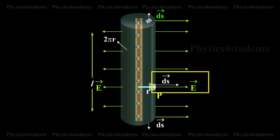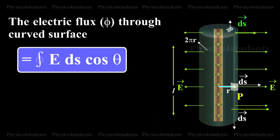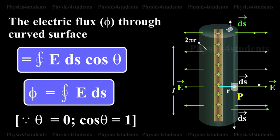Vector E and vector ds are along the same direction. The electric flux phi through curved surface equals integral E ds cos theta. Phi equals integral E into ds. Theta equals 0, cos theta equals 1.